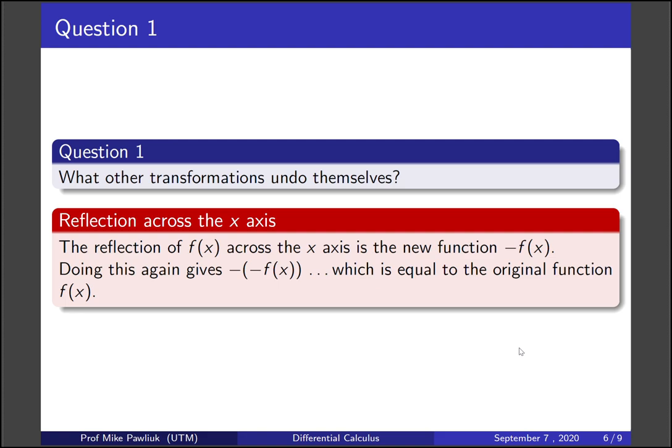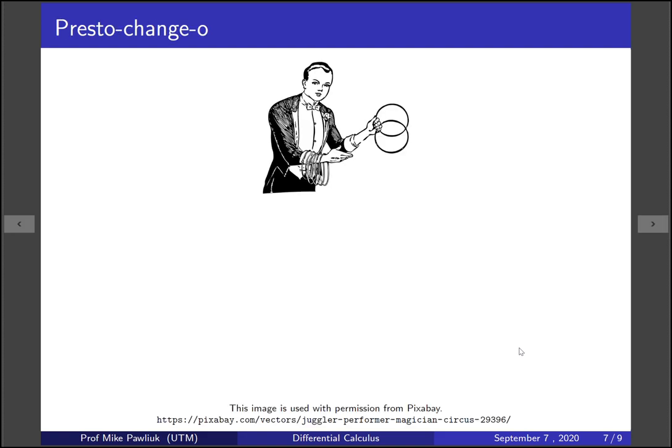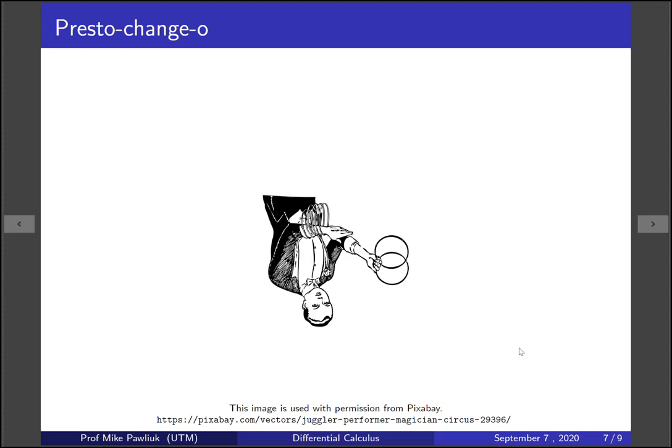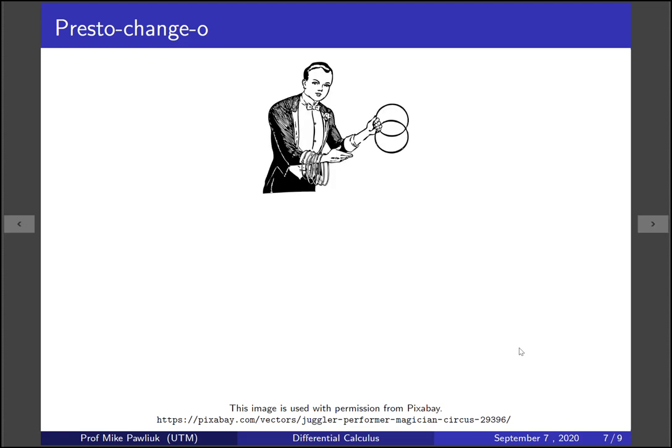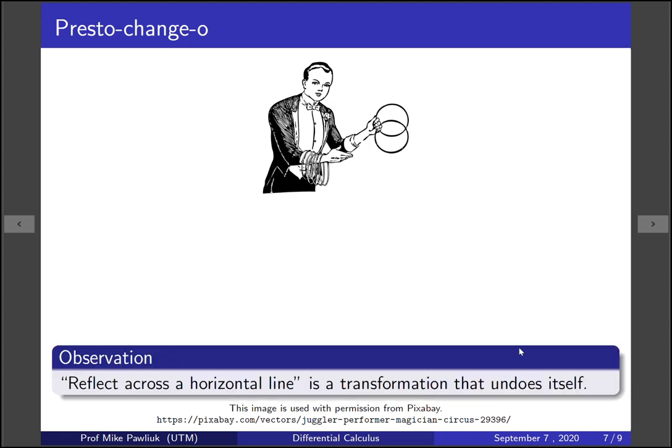Let's see this visually. Here's our famous magician again, and if we press our 'reflect across the horizontal axis' button, we get this image. If we press that same button again, we get back to the beginning. So the observation is that reflecting across a horizontal line is a transformation that undoes itself.